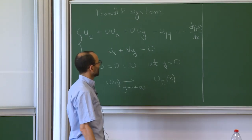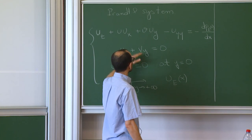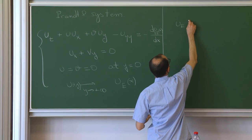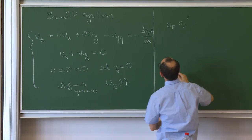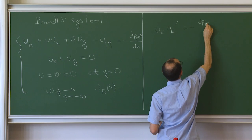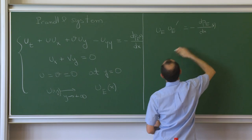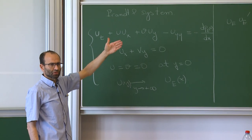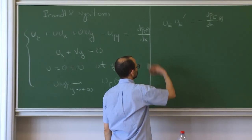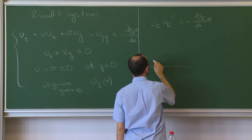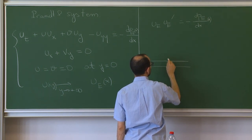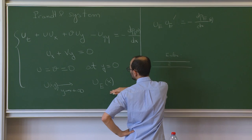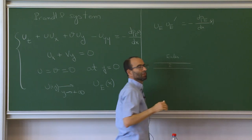The u_Euler and p_Euler are given. Just from looking at the equation when y goes to infinity, you also deduce that u_Euler, which is just a function of x, equals minus something — this is some sort of compatibility between these two things. And you can see this as just the trace of the Euler equation that you are normally solving.